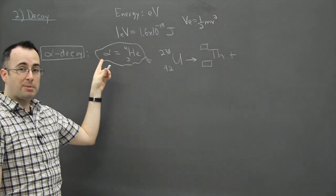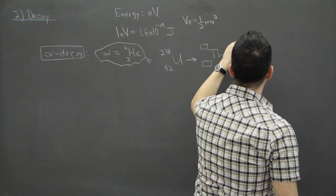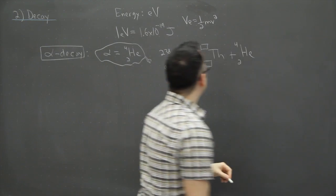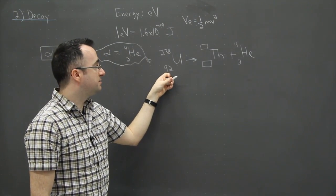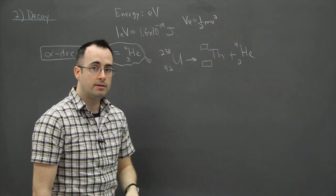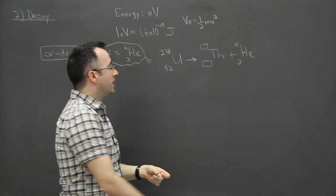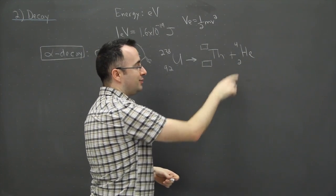This will help us because the number of protons at the bottom here must be the same as the total sum of the number of protons on the right. So in that case then, all I have to do is be able to add or subtract and figure out, well, 92 equals what plus 2?